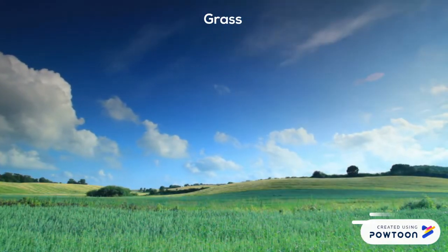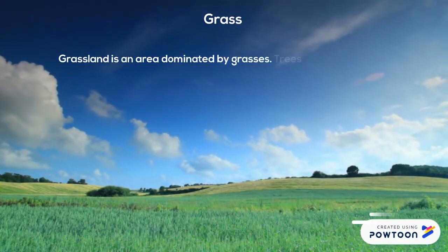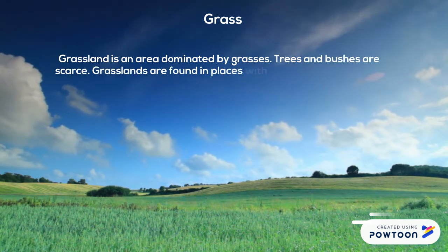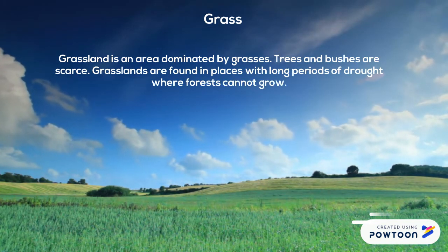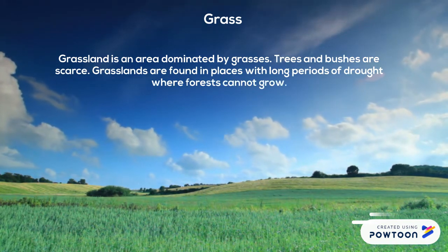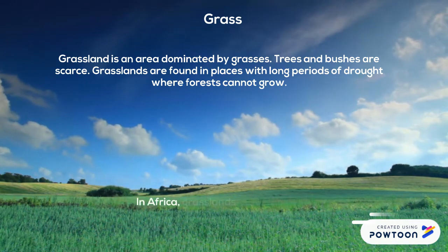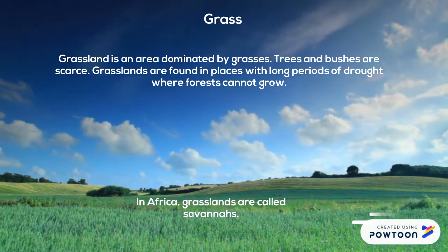Grassland is an area dominated by grasses. Trees and bushes are scarce. Grasslands are found in places with long periods of drought where forests cannot grow. In Africa, grasslands are called savannas.